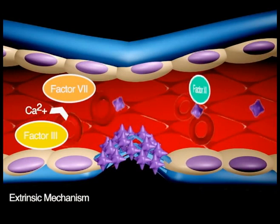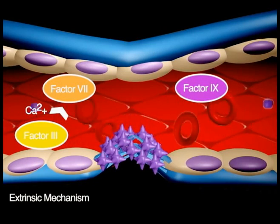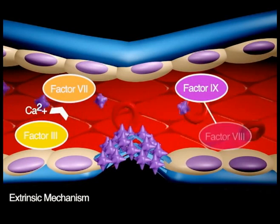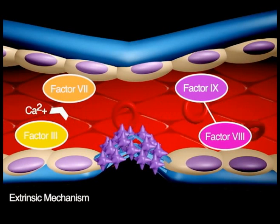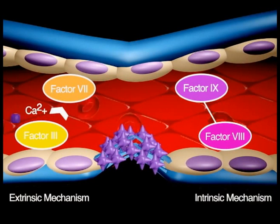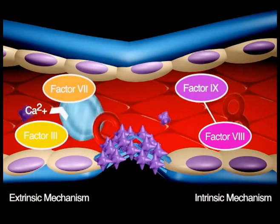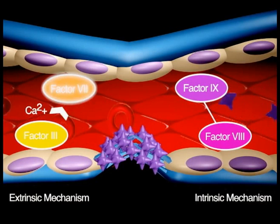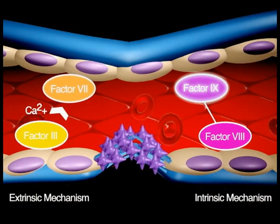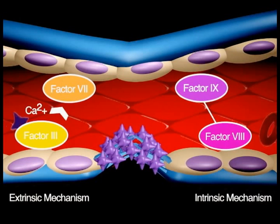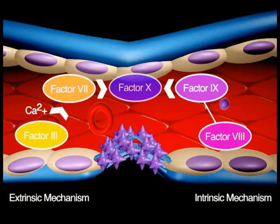Factor X from active platelets will activate factor XI, which will activate factor IX, together with its cofactor, factor VIII, thus initiating the intrinsic mechanism. Both active factor VII and active factor IX will promote cascade reactions, eventually activating factor X.